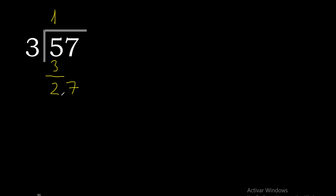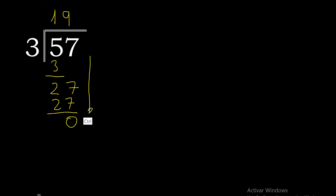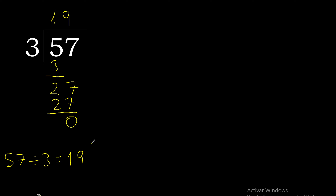Bring down 7, giving us 27. 3 multiplied by 9 is 27 — exact. 27 minus 27 is 0. There is no number that goes down, therefore we finish. The remainder is 0, and 57 divided by 3 is 19.